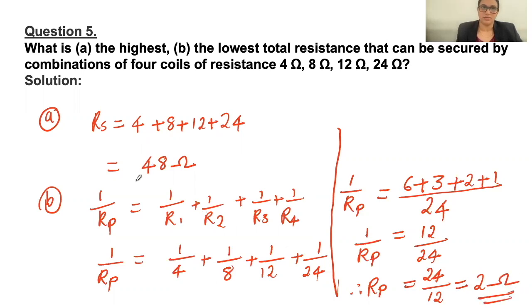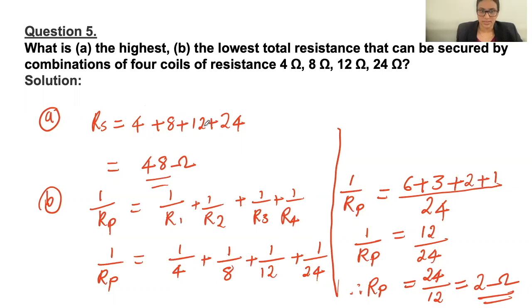So compare this: 48 ohm and 2 ohm. So 48 ohm will be the highest and 2 ohm will be the lowest. When four resistors are connected in series, that will be the highest resistance. When four resistors are connected in parallel, that will be the lowest resistance.